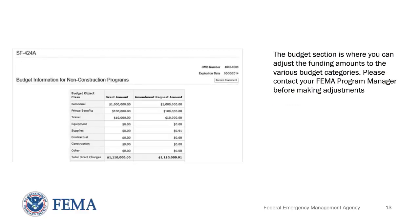Following the Period of Performance section is the Budget section of the Amendment page. Here is where you can adjust the funding amounts to the various budget categories. Please contact your FEMA Program Manager before making adjustments to the Budget section.